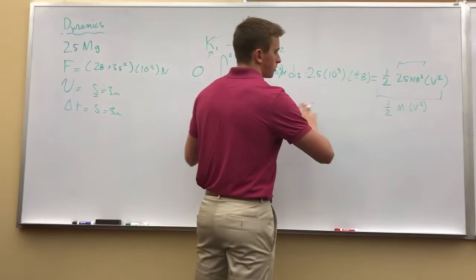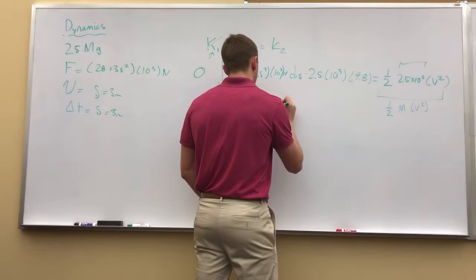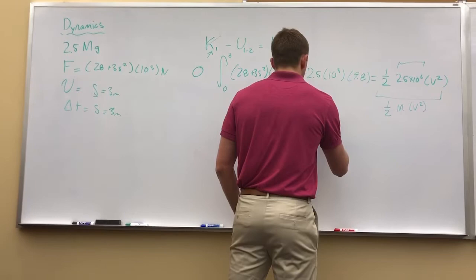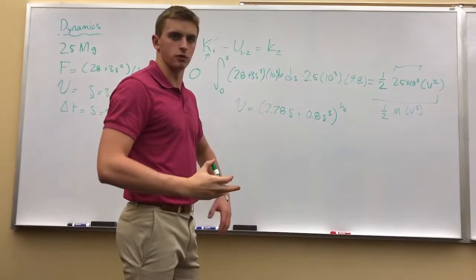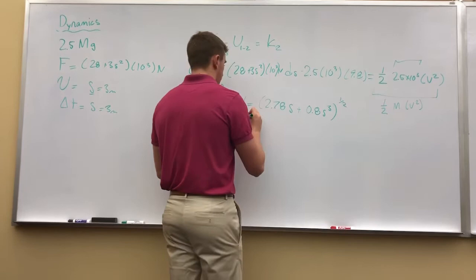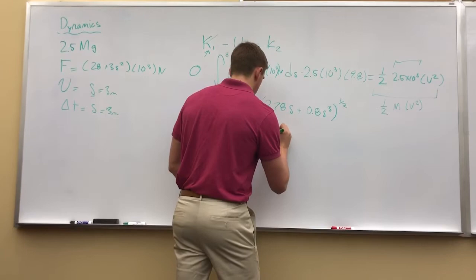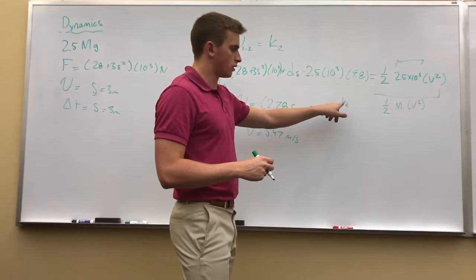When we're done solving this, once you do all your algebra and figure out exactly where we are, we understand that our velocity is equal to 2.78s - 2.78 dependent on our height - s plus 0.8 s cubed, all of that raised to the 1 and 1 half power. With the square root of this total function. When we plug in s of 3, we get a velocity, so s equals 3, we get a velocity equal to 5.47 meters per second. If you go through and plug this in your calculator, 2.78 times 3 plus 0.8 times 3 cubed, take the square root of that, we get 5.47 meters per second.